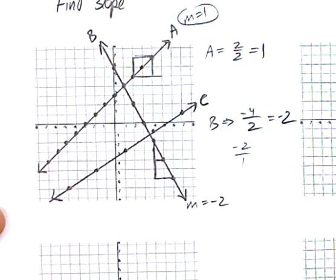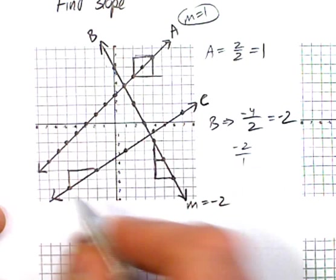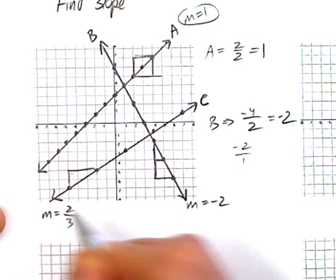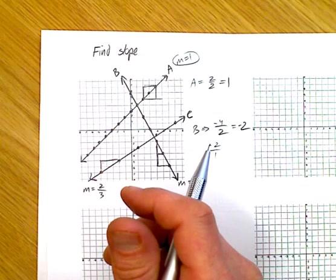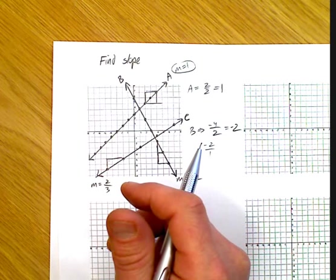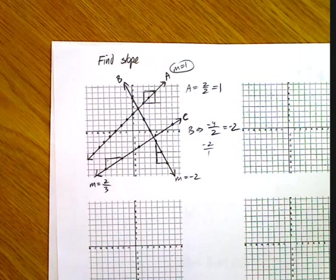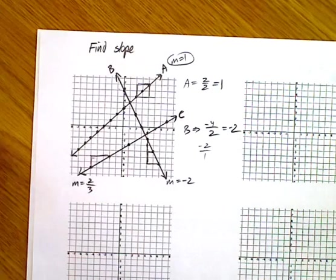Try C. A rise of 2 and a run of 3. So for C, your slope would be negative 2 thirds. Whoa, that was a quick zoom in there. So that's finding the slope of a line. Hopefully that part makes a little bit of sense to you. We will look at a couple other questions here for sure.